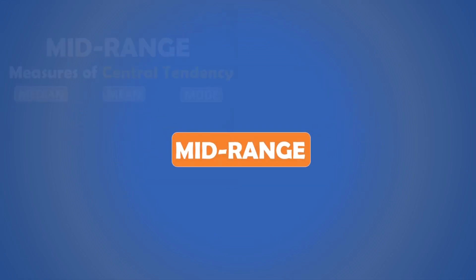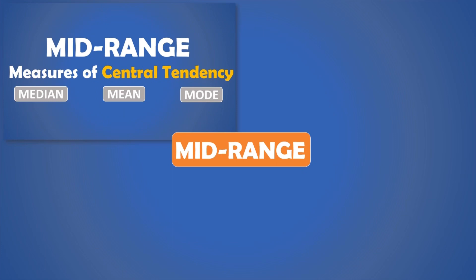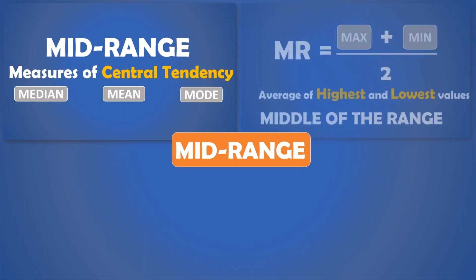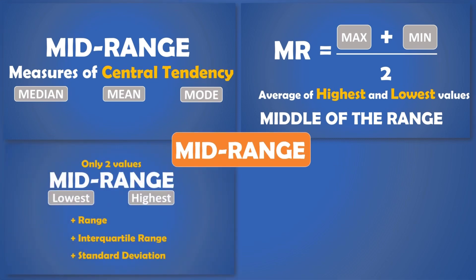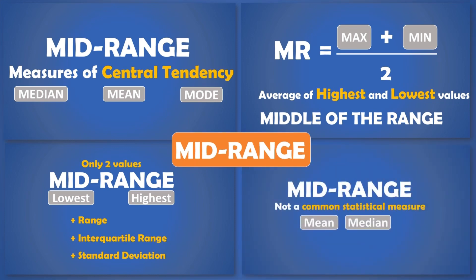Remember, the mid-range is one of the measures of central tendency. It is calculated by finding the average of the highest and the lowest values in a data set. Since it uses only two values in the data set, it may not accurately capture the overall distribution of the data. So it should be interpreted with caution and not interpreted alone, but with other measures. Generally, the mid-range is not commonly used in statistical analysis compared to other measures of central tendency like the mean or median.